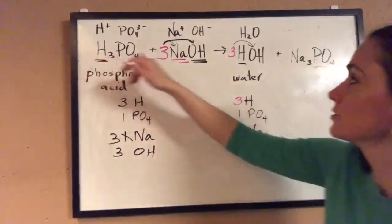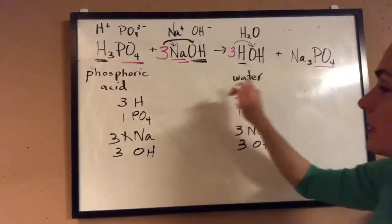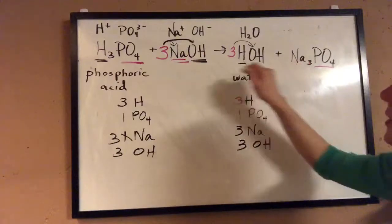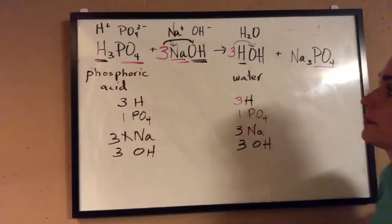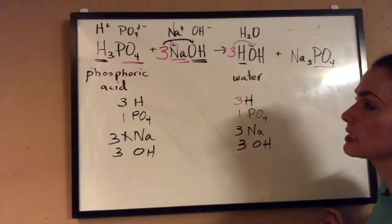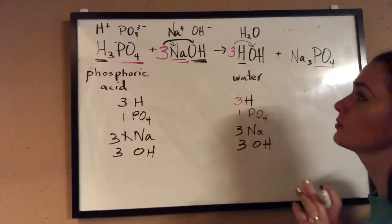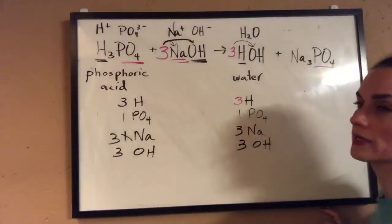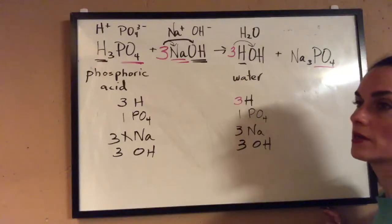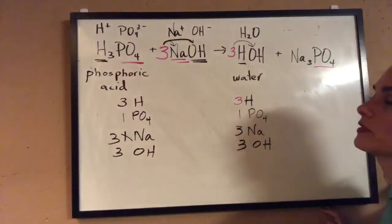It's easier when you have polyatomic ions to balance them as units. If you want to split everything apart — number of hydrogens, number of oxygens — it still balances out. We balance equations because of the law of conservation of mass: matter is neither created nor destroyed in a chemical reaction, it just changes from one form to another. If we strip everything down to elements: three hydrogen plus three hydrogen gives six hydrogens on each side; oxygen — four plus three equals seven, and three plus four equals seven oxygens.